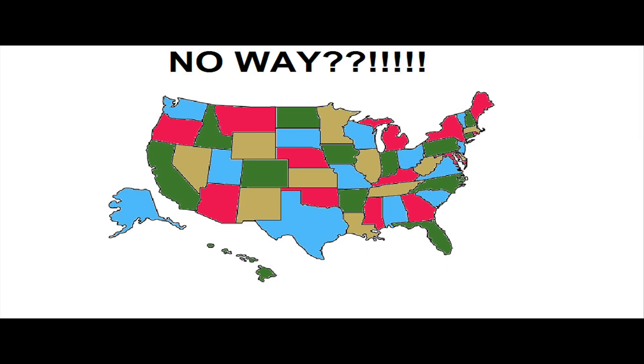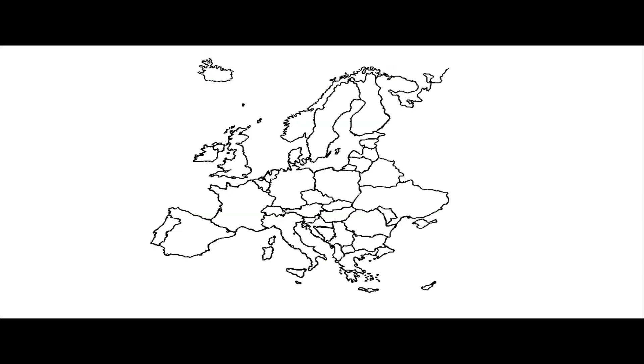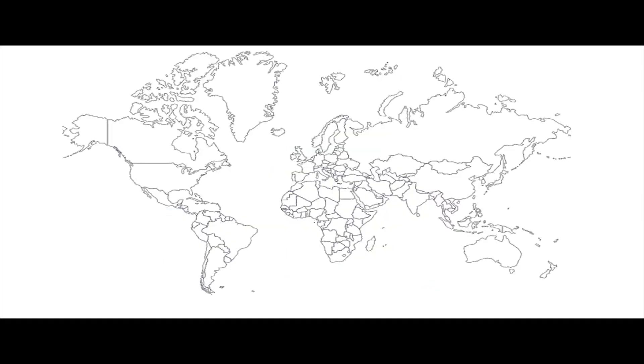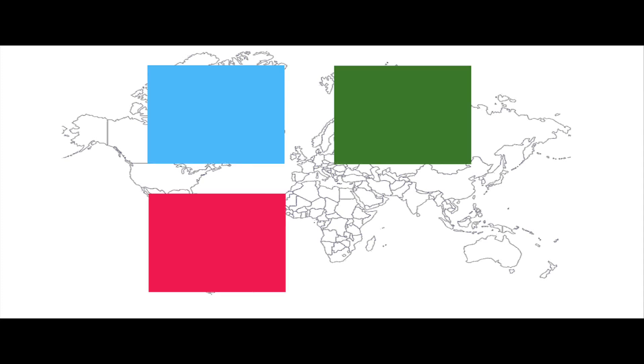This may not seem that surprising, but what if I were to tell you that a map of Europe could also be colored using only four colors? Or that any map could be colored with just four colors? Well, it's true.